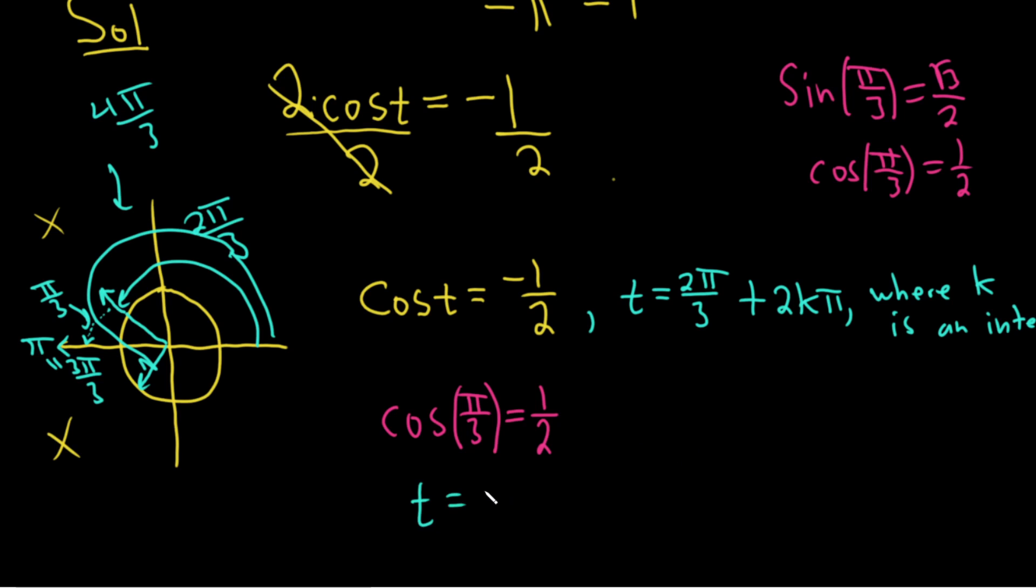So here, t would be 4 pi over 3 plus 2k pi, where k is an integer. So we have all of these answers that I can't even write. An integer. And writing is falling apart. So we get this and this as well.